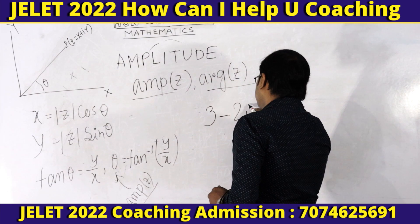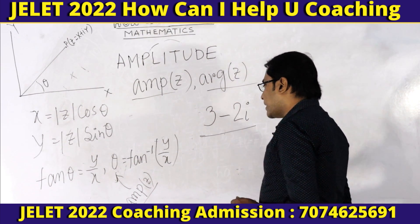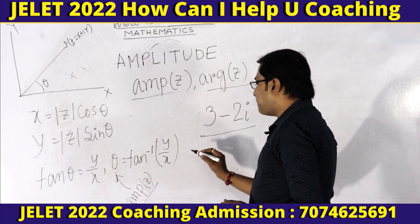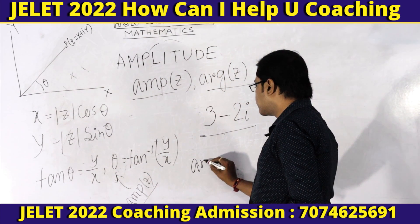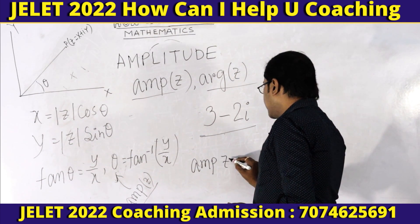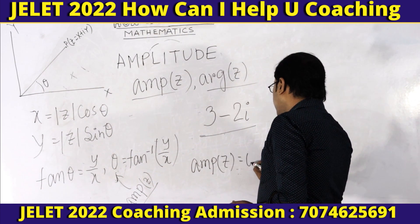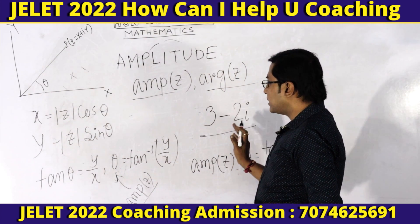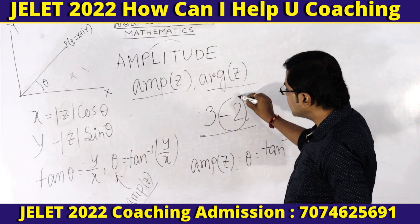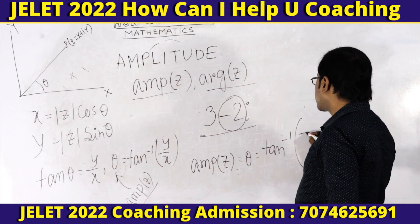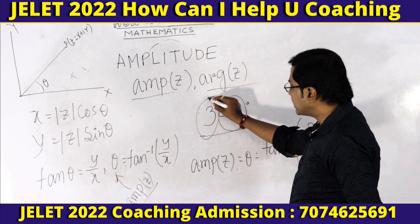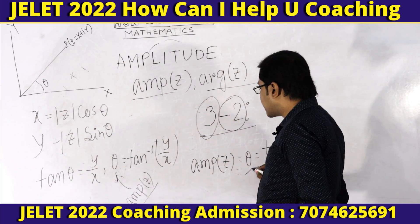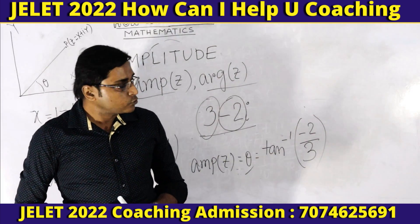Example: for z equals 3 minus 2i, amplitude z equals theta equals tan inverse of imaginary part over real part. Imaginary part is minus 2, real part is 3. So amp z equals tan inverse of minus 2 by 3.